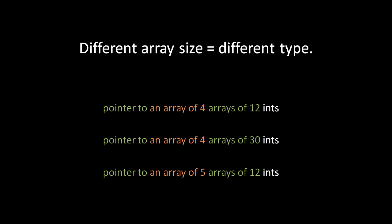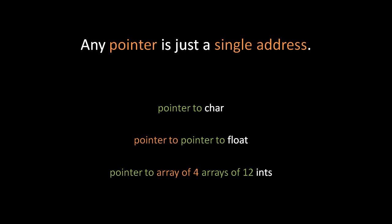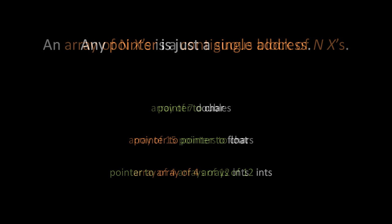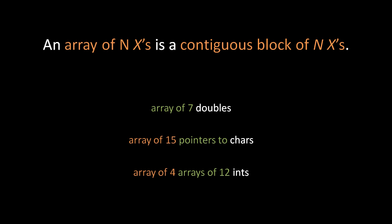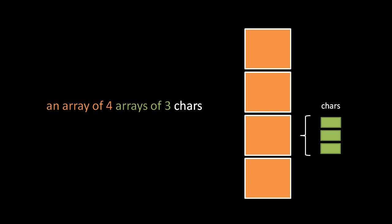Again, be clear that arrays of different sizes are different types. So here we have 3 pointer types which all point to arrays of arrays of ints, but because the arrays are of different sizes, these are 3 separate types. Pointers are the easy case — a pointer of any type always represents just a single address. As for arrays, an array of N x's is a contiguous block of N x's. So an array of 7 doubles is a contiguous block that fits 7 doubles, and an array of 4 arrays of 12 ints is a contiguous block that fits 4 arrays of 12 ints, where each array of 12 ints is in turn a contiguous block. Here's an array of 4 arrays of 3 chars — the whole block is made up of 4 blocks, each of which is made up of 3 chars.